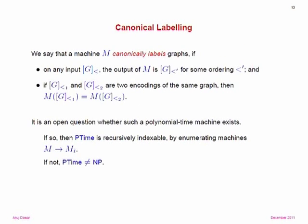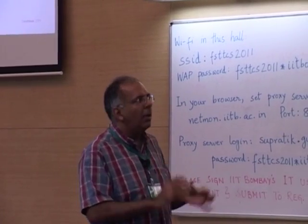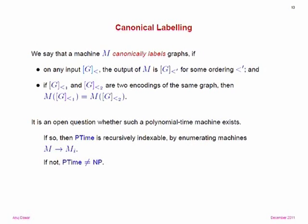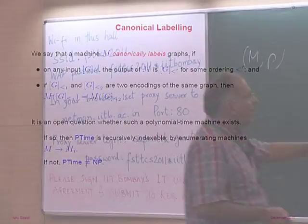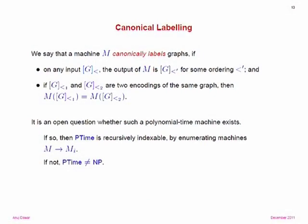Say that a machine M canonically labels graphs: whenever you give it an input — a string representing a graph — the output is a string representing the same graph but possibly under a reordering, and if you give it two different encodings of the same graph, the outputs are identical as strings. In other words, this machine picks a canonical element from each equivalence class. If you can do this in polynomial time, then there's a logic for P in the sense we described.